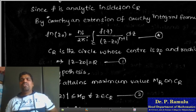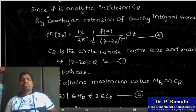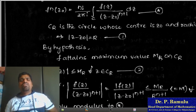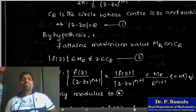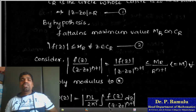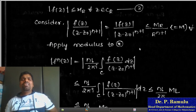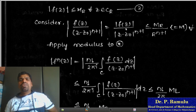On C_r, |z - z₀| = r, so |z - z₀|^(n+1) = r^(n+1). By hypothesis, f attains maximum value M on C_r, which implies |f(z)| ≤ M for all z on C_r. Therefore |f(z)/(z - z₀)^(n+1)| ≤ M/r^(n+1). Applying the ML theorem, |f^(n)(z₀)| ≤ n!/(2π) × (M/r^(n+1)) × 2πr = n! × M/r^n. This proves Cauchy's inequality.